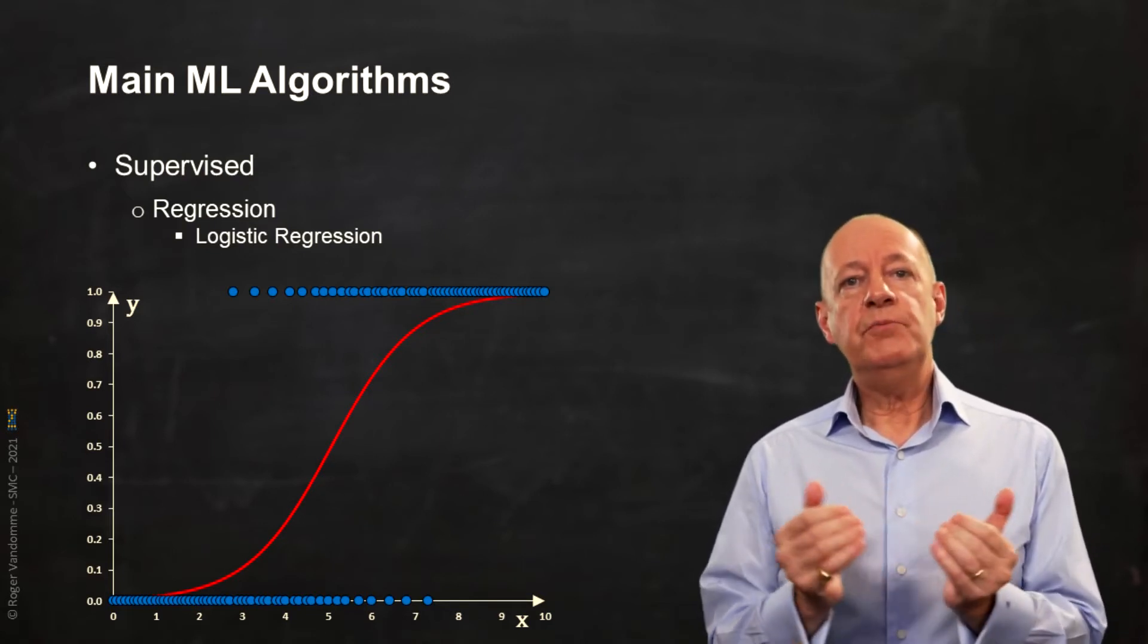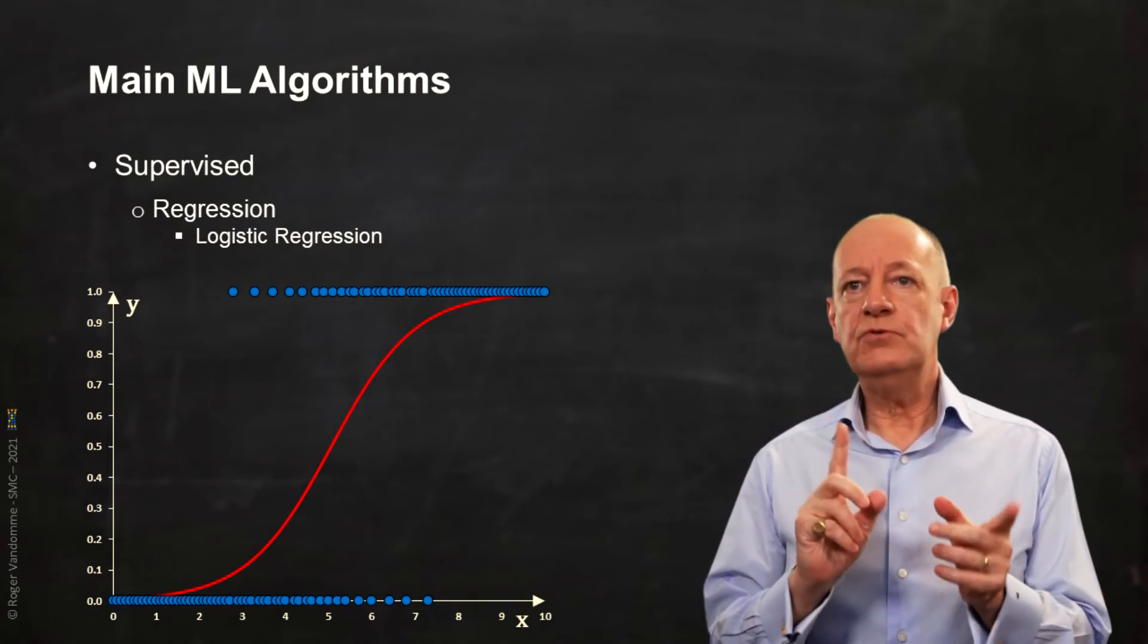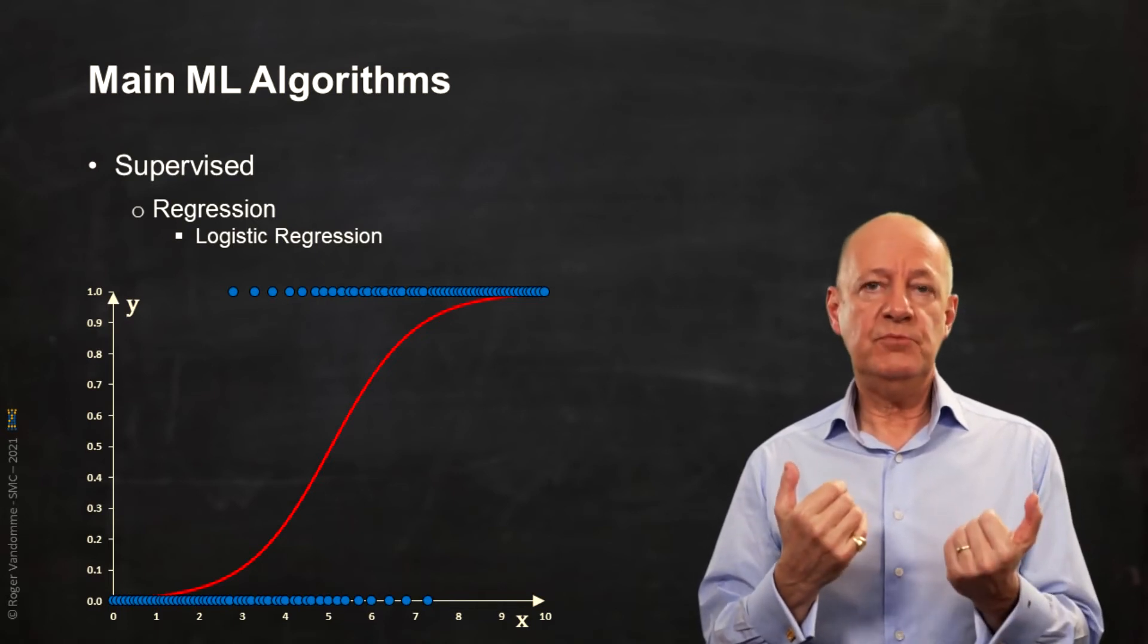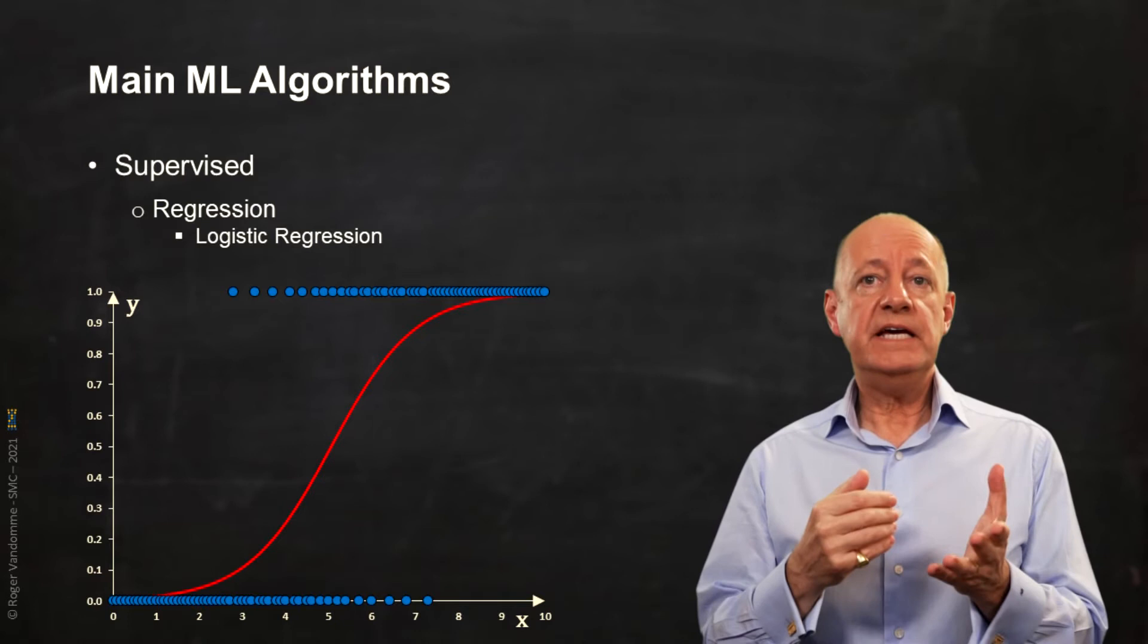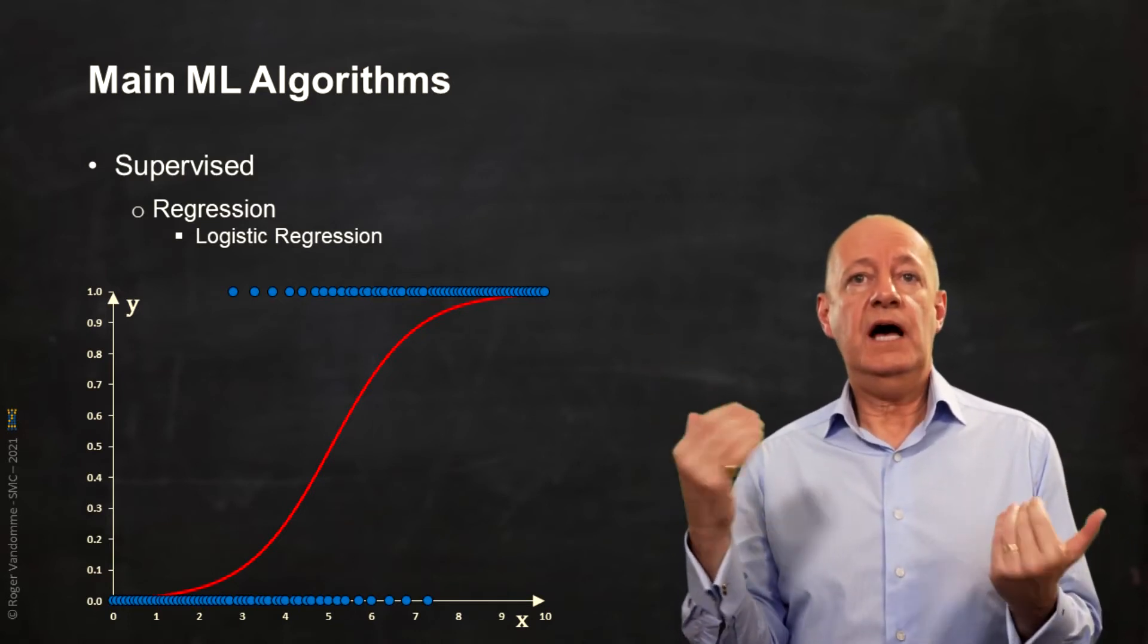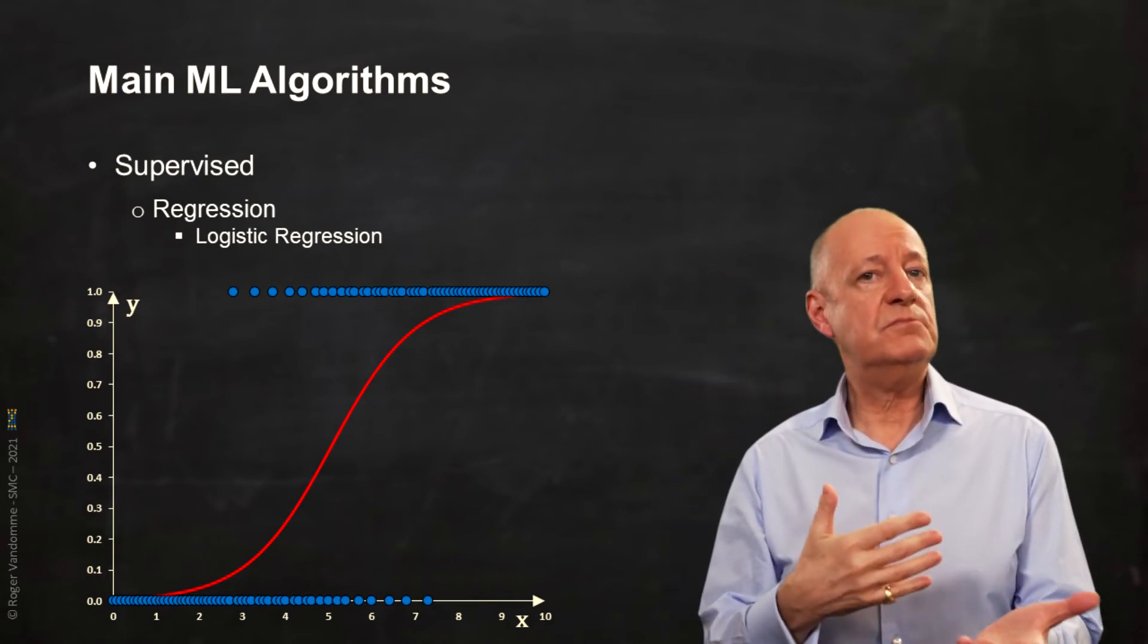Indeed, it is used only when the prediction has only two possible values, good or bad, true or false. Two possibilities represented by numbers 0 and 1. In this case, it is impossible to use a line, infinite by essence, at the risk of having more true than true and more false than false, which doesn't make any sense.